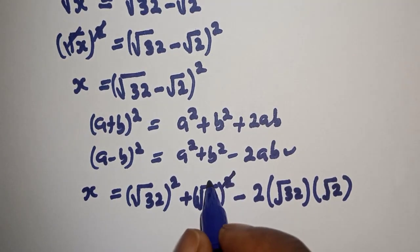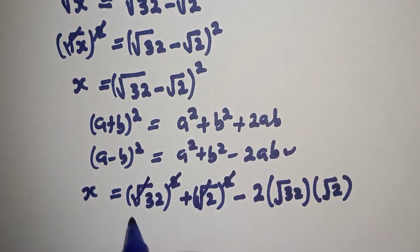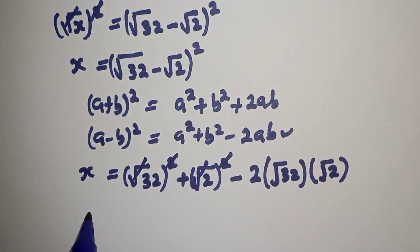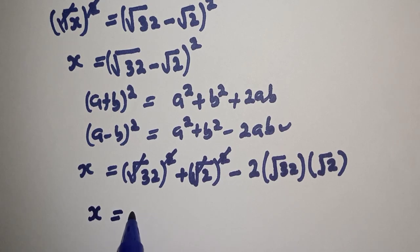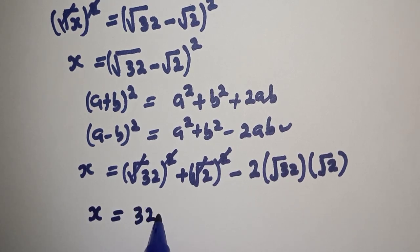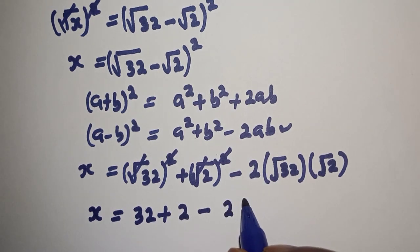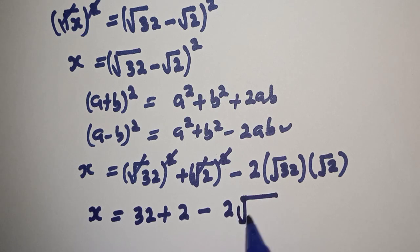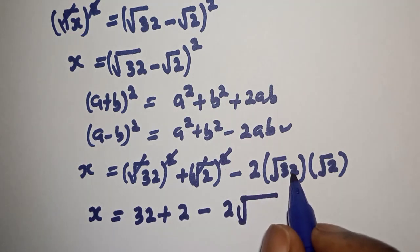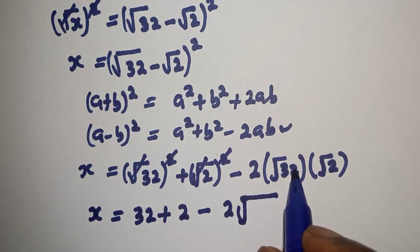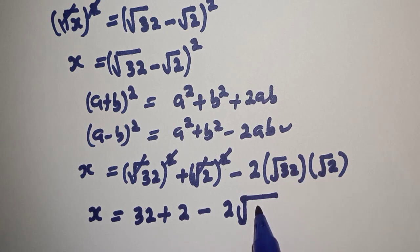This will cancel with this, and this will cancel with this. Then S is equal to 32 plus 2 minus 2 multiplied by root 32 multiplied by root 2, that is root 64.